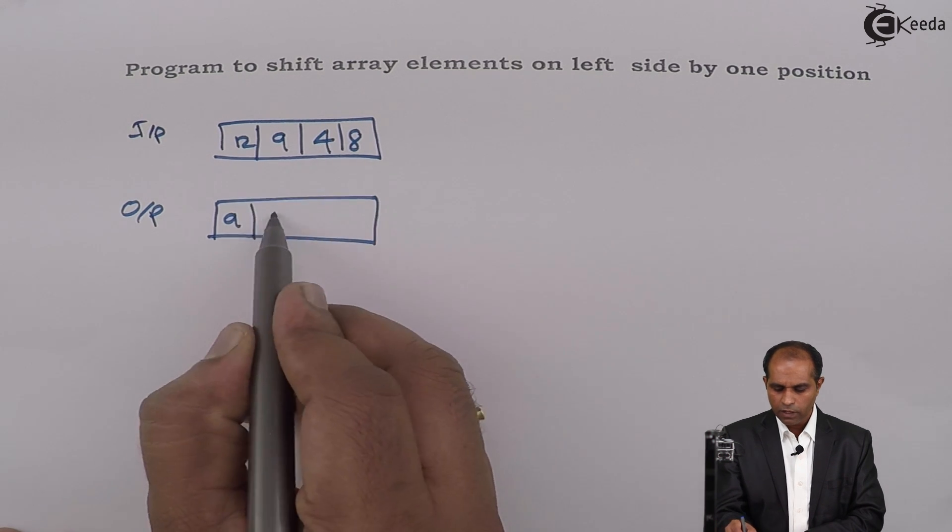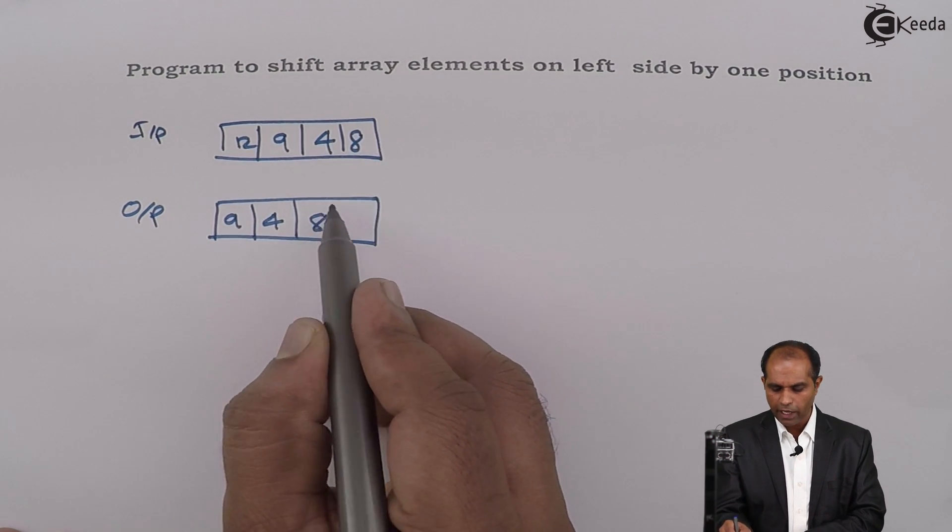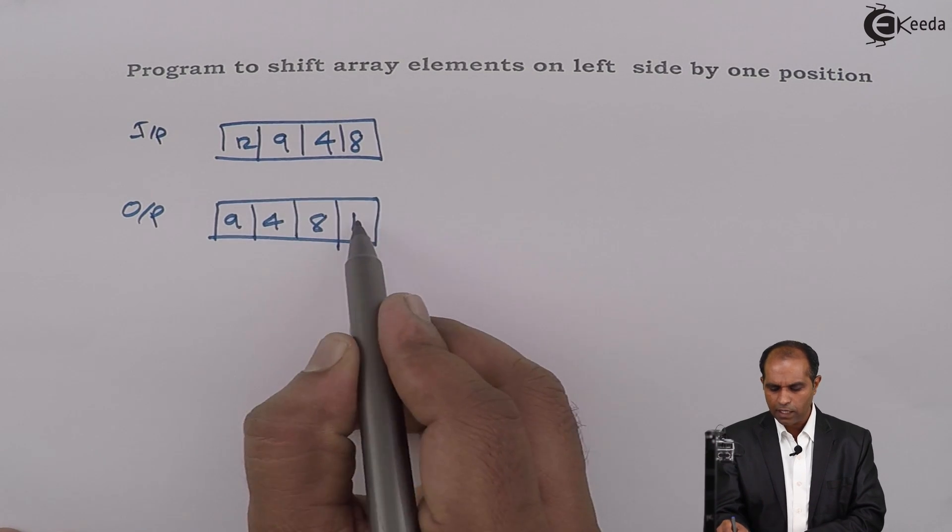So it means that the first element has to be 9, the next element has to be 4, the next element has to be 8, and then the last element has to be 12.